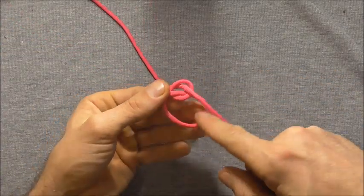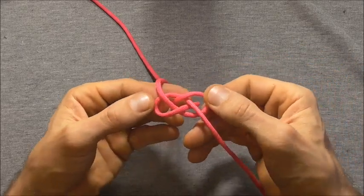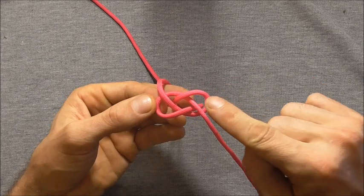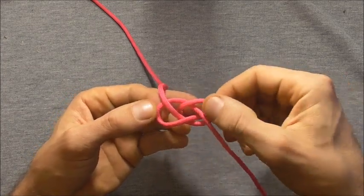And then we have this loop down the bottom here and we have something that resembles a carrick bend here at the top. And you'll notice there's a lobe here on the right and a lobe here on the left.